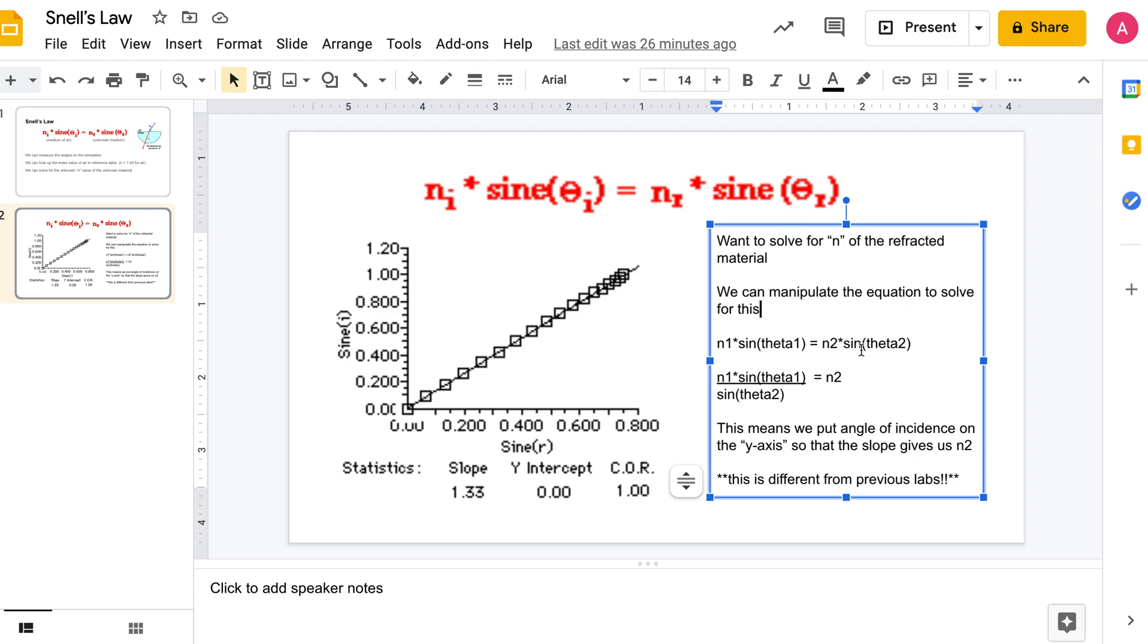In our graph we want to solve for the n value, or the index of refraction of the unknown refracted material. We can manipulate this equation to solve for n₂ because that's what we want to know. To do that we divide by sine θ₂ on both sides and we get n₁ times sine θ₁ divided by sine θ₂ equals n₂, which would be the slope.